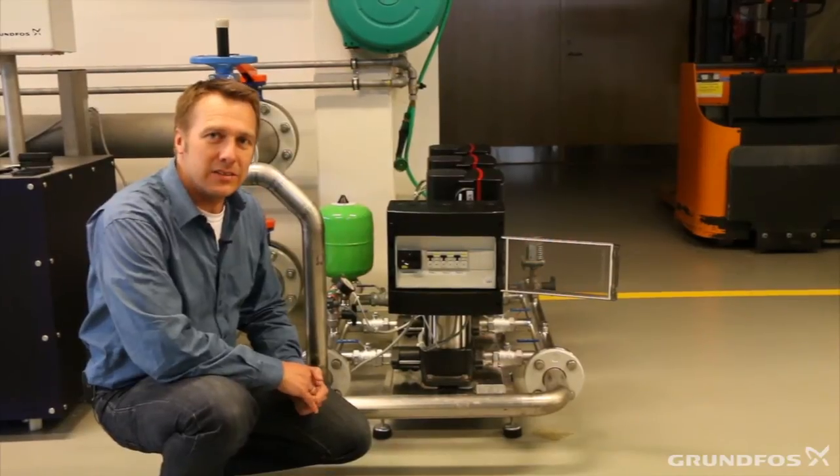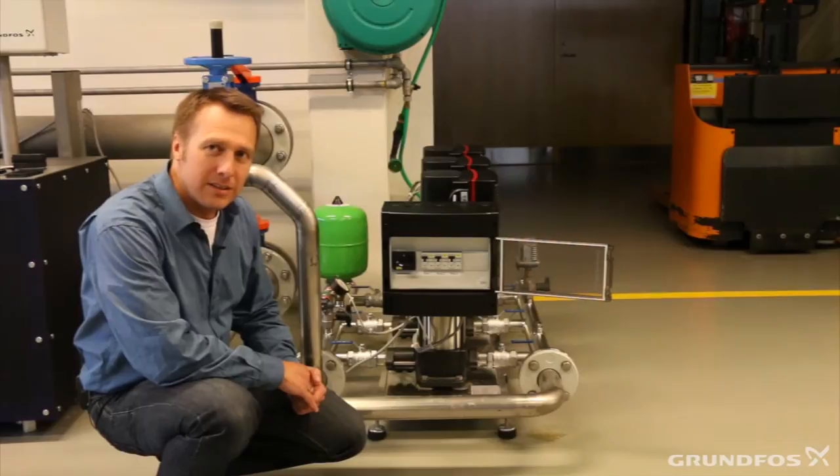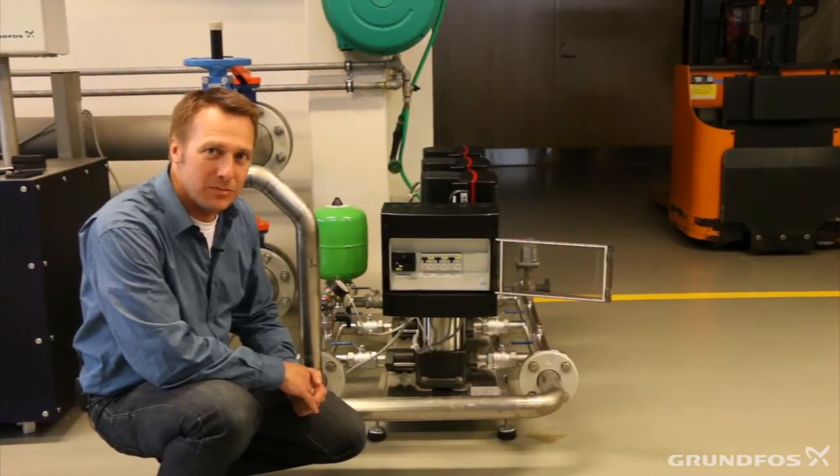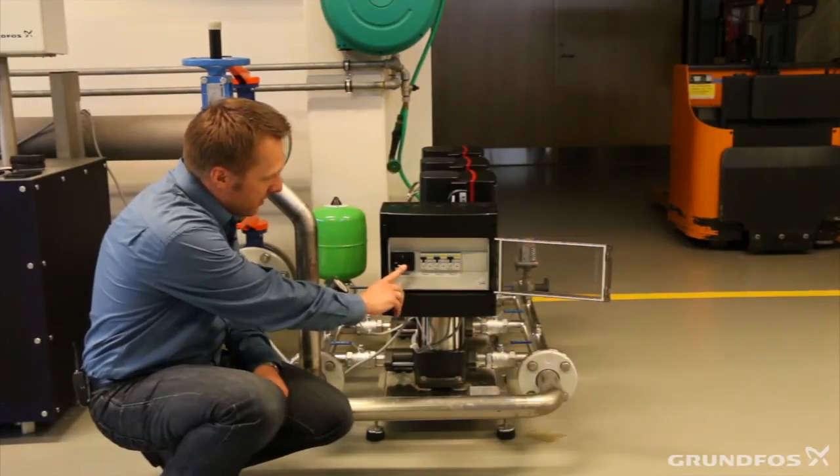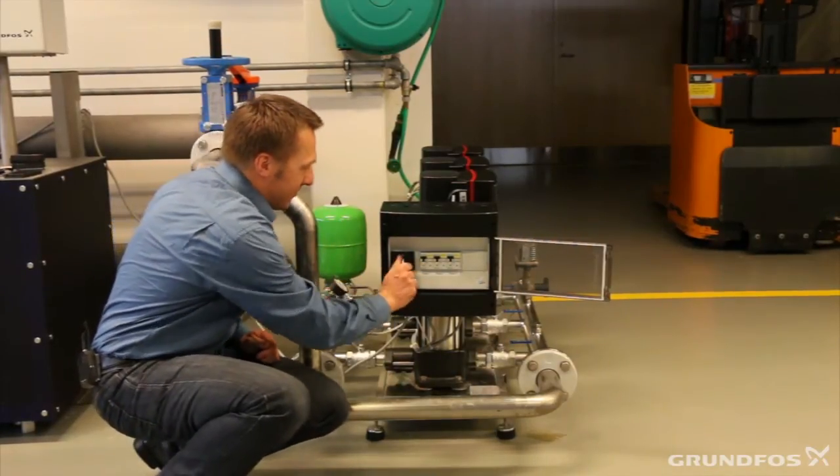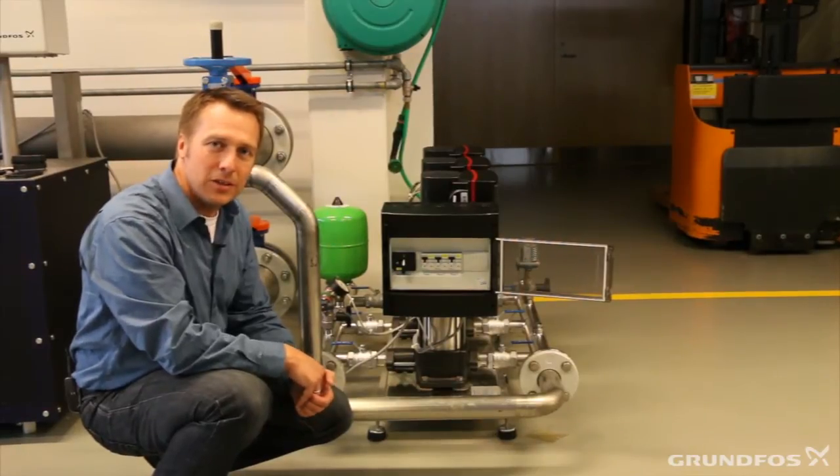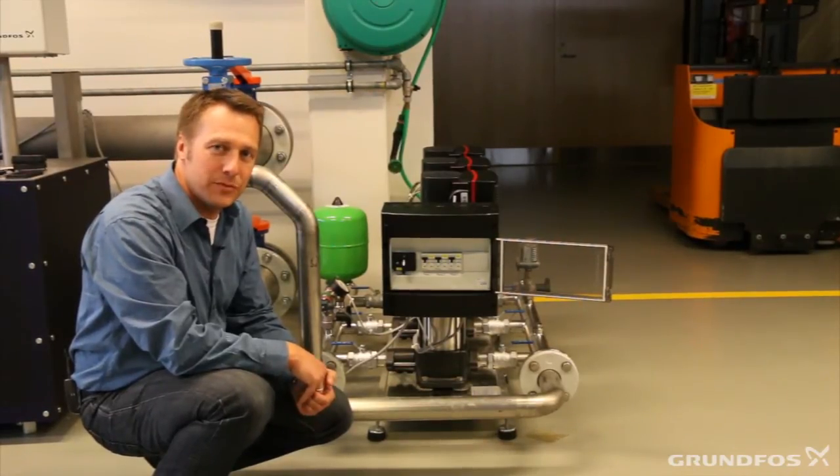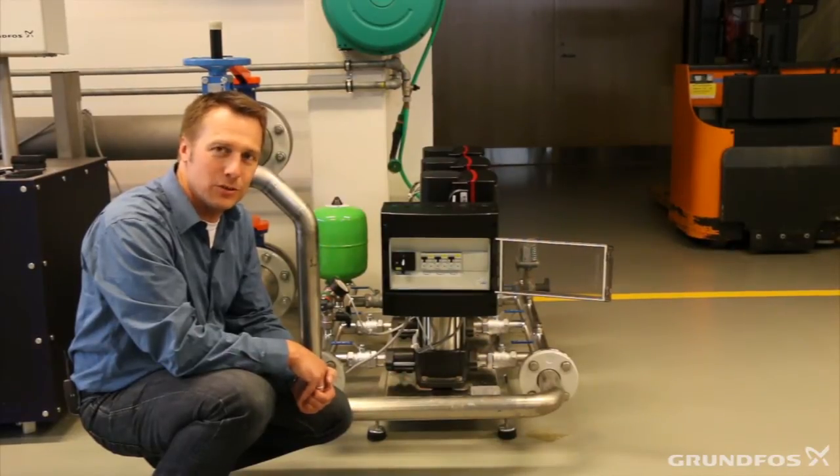So let's now see how the system is working in practice. We just start up the whole system, we provide power and the only thing that we have to do is turn this main switch on. And now we'll have a look at what is happening if the pressure in the system is changing and we want to control the pressure and keep it at a constant pressure.